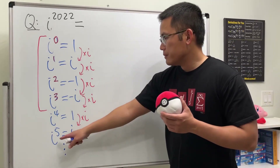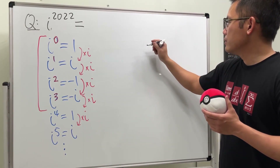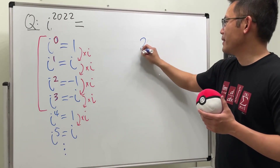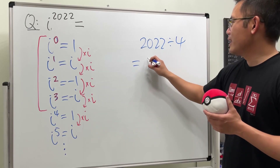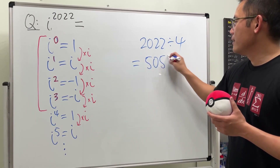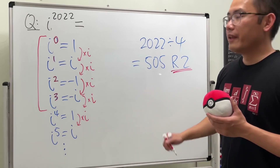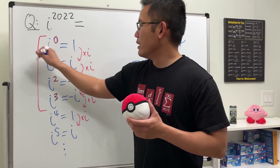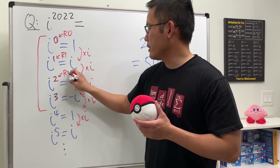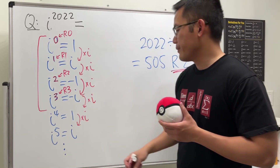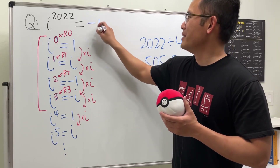So for i to the 2022nd power, all we need to do is divide 2022 by 4. You end up with 505 but with a remainder of 2. When we have remainder 2, this matches the case where the power is 2, which gives negative 1. To summarize: remainder 0 gives 1, remainder 1 gives i, remainder 2 gives negative 1, remainder 3 gives negative i. So i to the 2022 is equal to negative 1.